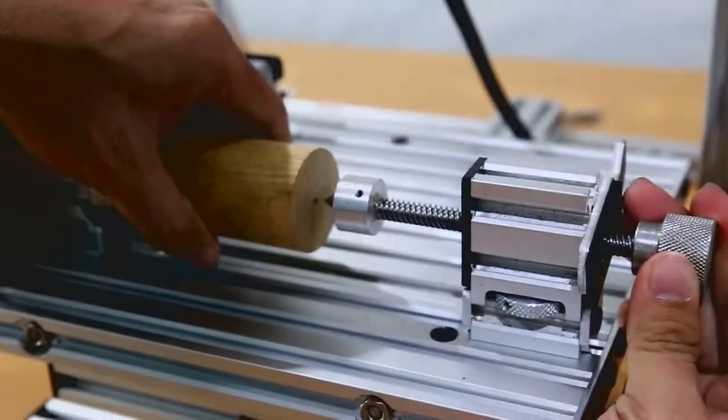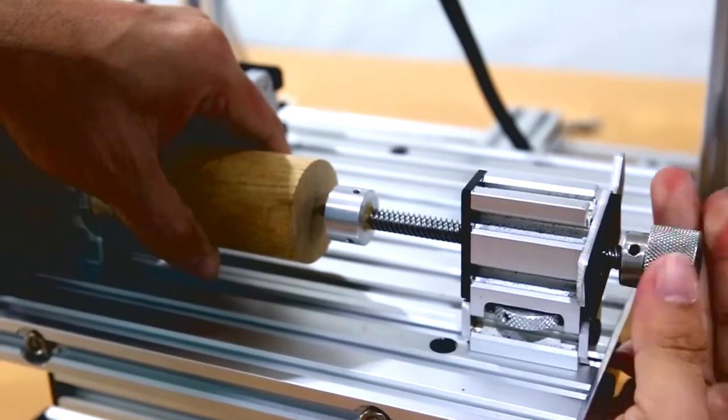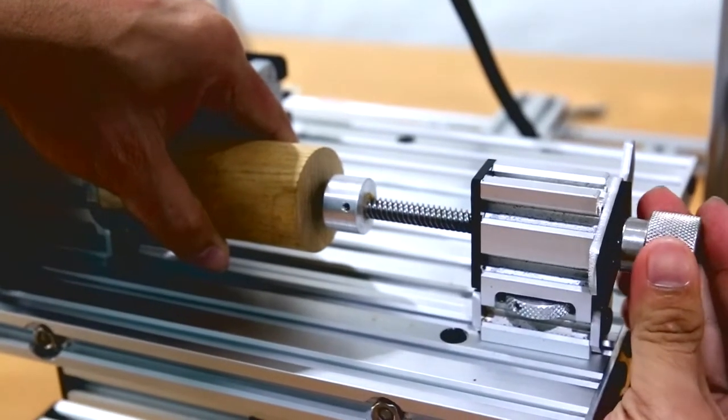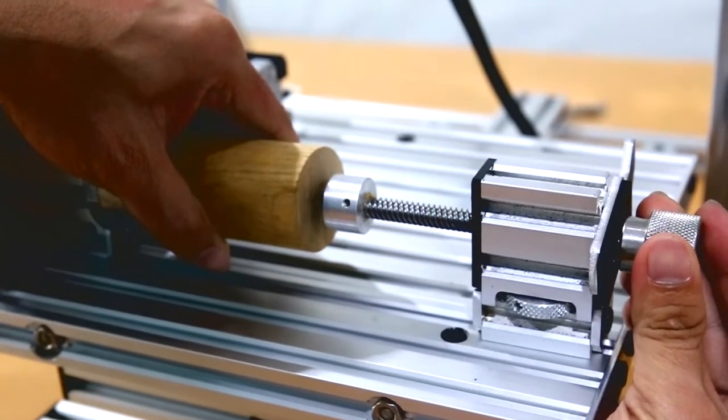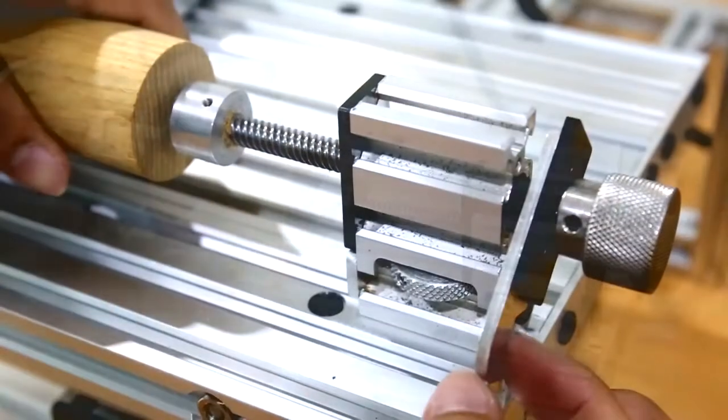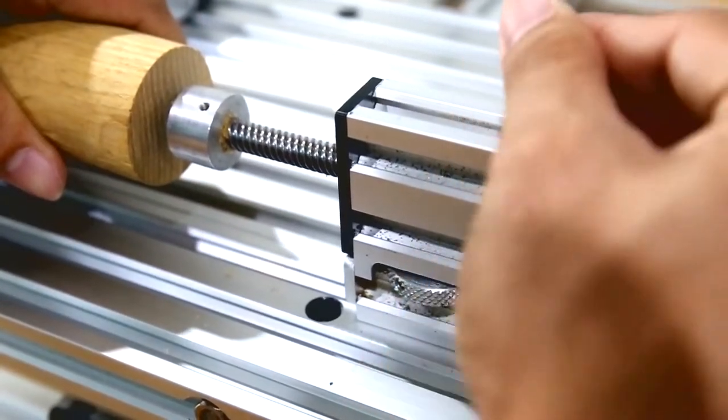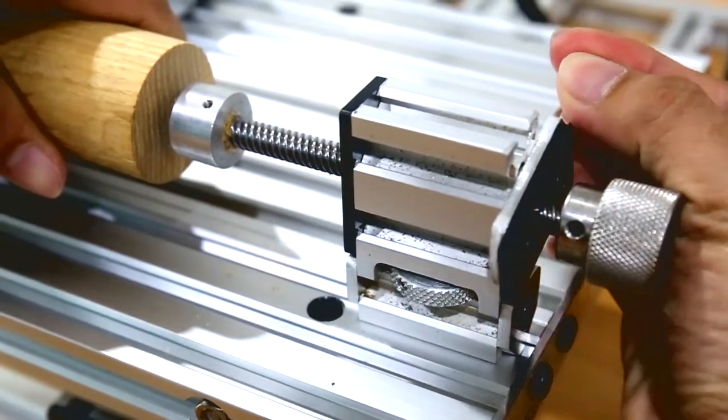Then rotate the knob of the tailstock in a clockwise direction until it reaches and holds the blank material. Lastly, secure the blank material by rotating the lever on the tailstock as shown.